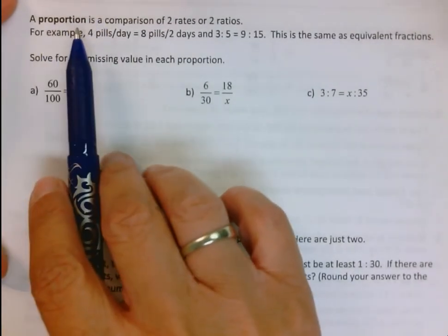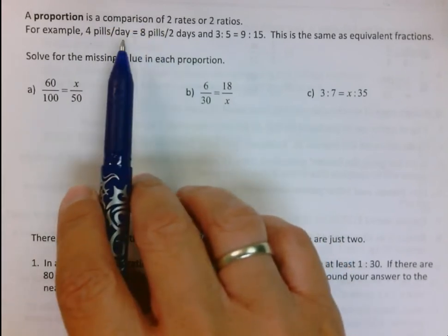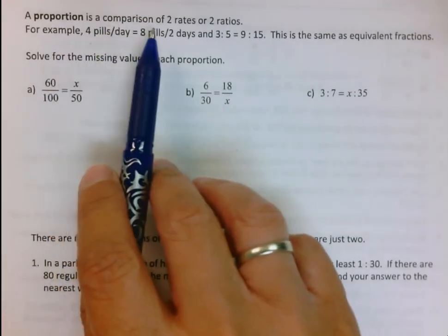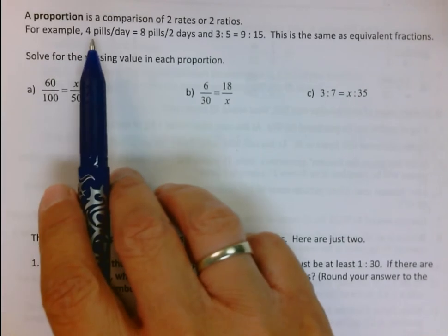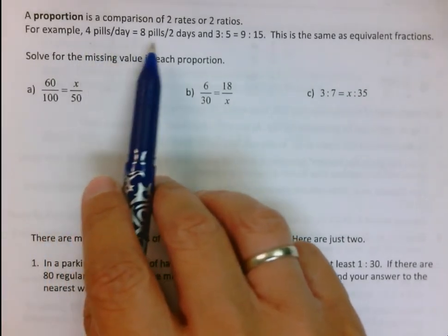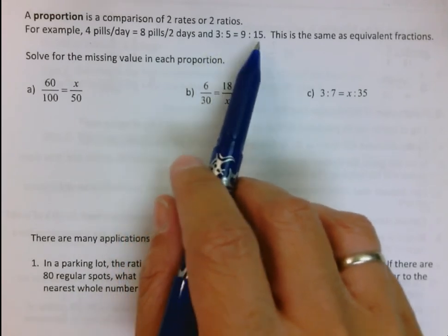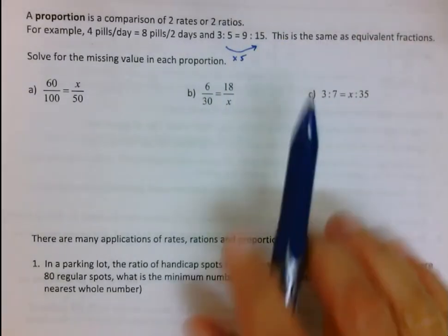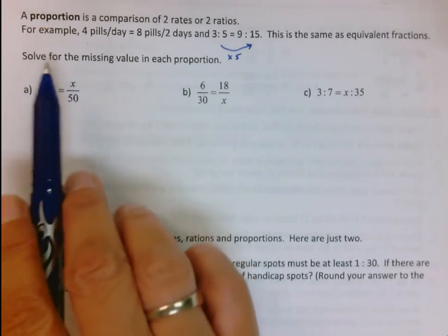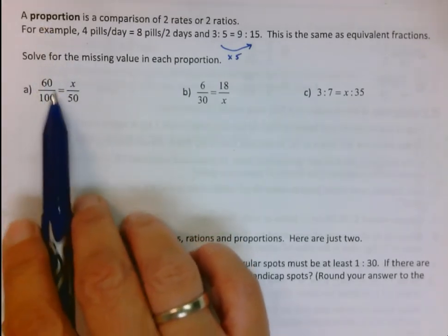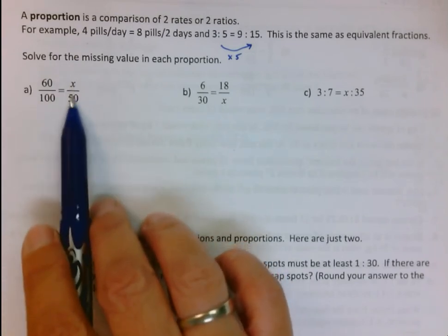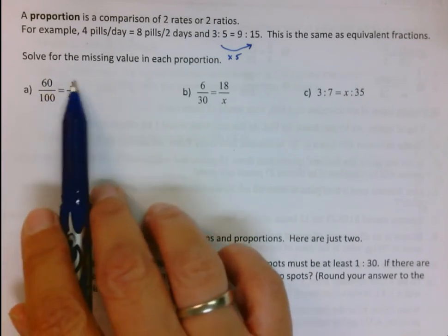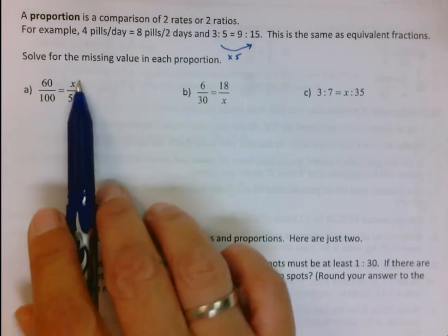The next thing is called a proportion. A proportion is just a ratio, but you have two ratios involved. A proportion is a comparison of two rates or two ratios. For example, four pills a day is the same as eight pills for two days. Three to five is the same as nine to 15, because here we're just multiplying both of the numbers by three. So these are the same.